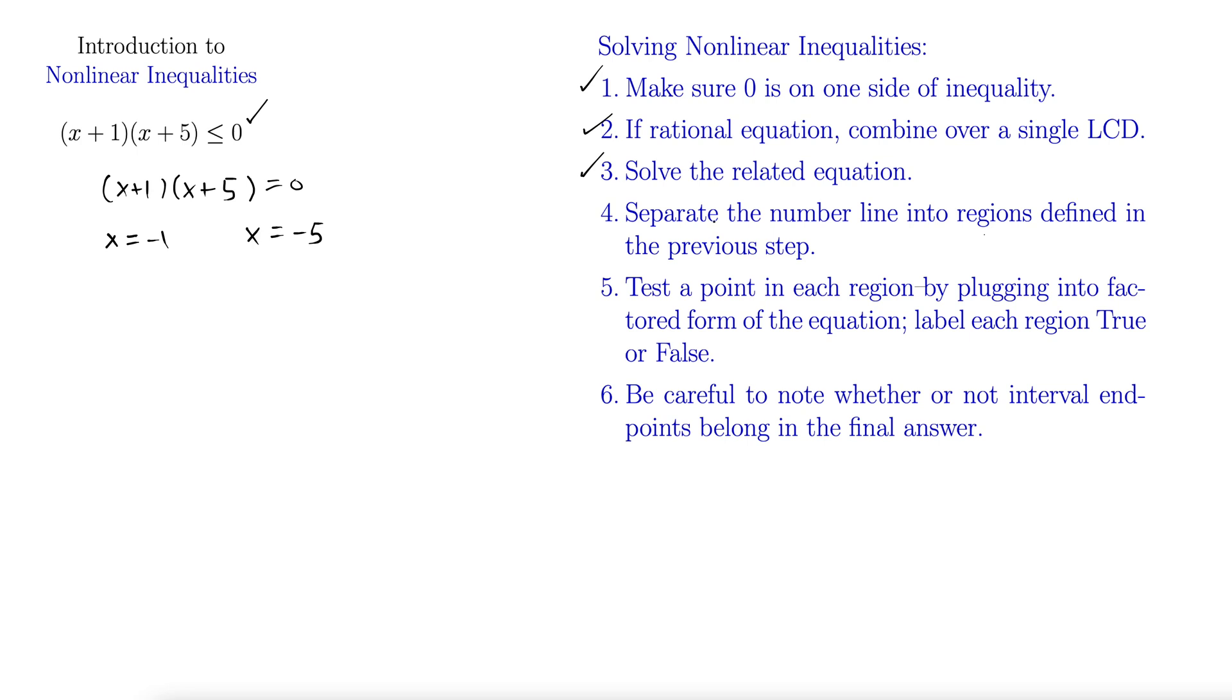Separate the number line into regions defined in the previous step. So we take a line like this. Here's -5, here's -1. So we have something like zero is probably here, but these are my main boundaries. I just put zero up there as a marker. So there we go. There's our regions. We have three regions: we have everything over here, that's one region. We have everything in the middle, that's another region. And then everything to the right of one, that's a third region.